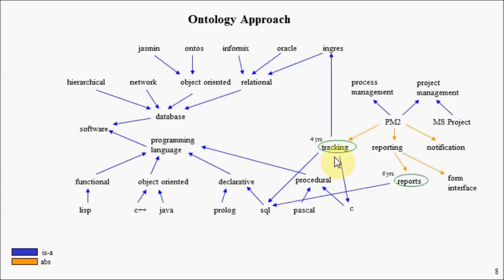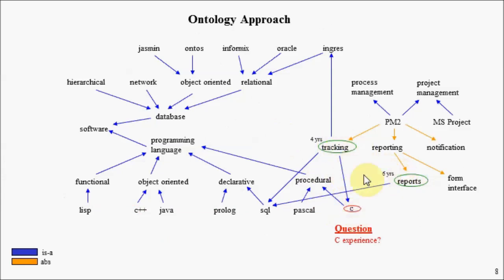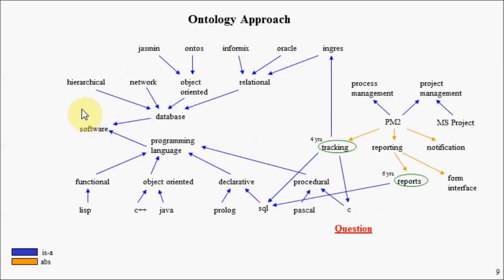Imagine we have two candidates for a potential job: someone that worked on this tracking system for four years, and someone that worked on this report subsystem for six years. You want to ask: which of these two candidates is better suited for doing C programming? The obvious answer is the tracking person, because the ontology overlay shows that this tracking subsystem utilized C code. For a task involving writing SQL code, both the tracking subsystem and the report subsystem utilized SQL code, so we'd probably take the reports person because they have six years of SQL experience versus four years for the tracking person.